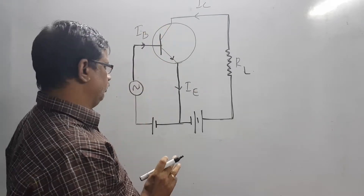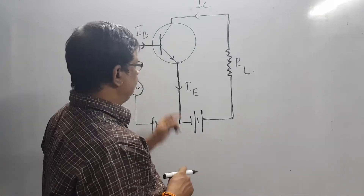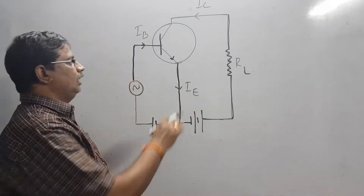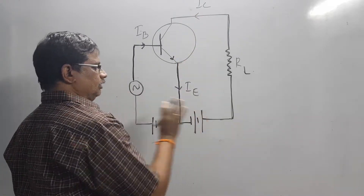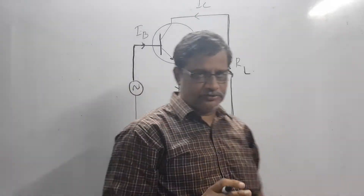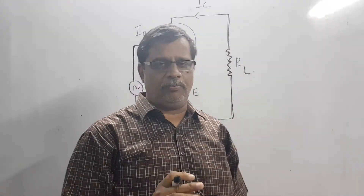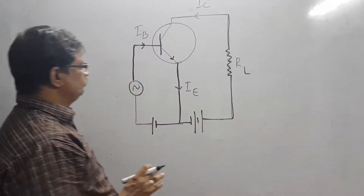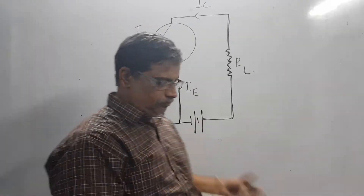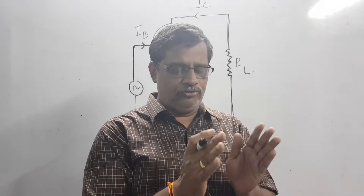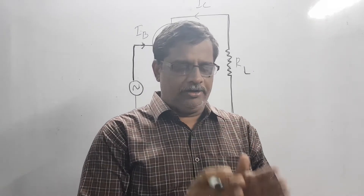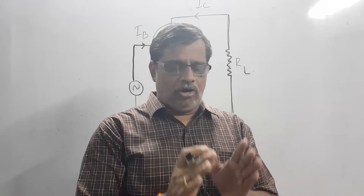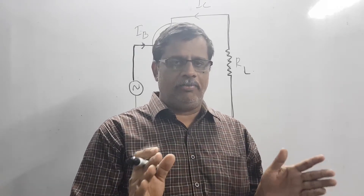We have an NPN transistor connected in the common emitter mode, working as an amplifier. The input circuit, which is the base-emitter junction, is properly forward biased, and the output circuit is properly reverse biased. A transistor is nothing but two PN junctions connected back to back.